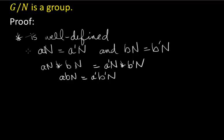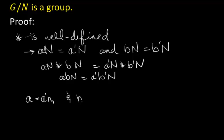If AN equals A'N, meaning they are the same coset, then we know that A equals A' times some little n in the normal subgroup. I'm going to call it N1 because we'll need more than one of these. And we know that B equals B' times some n, so I'll call it N2.